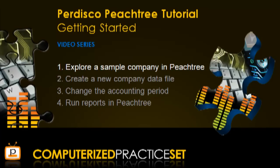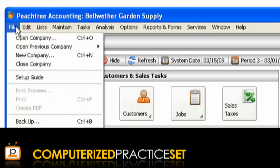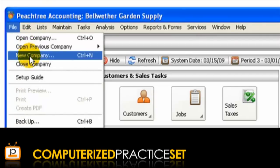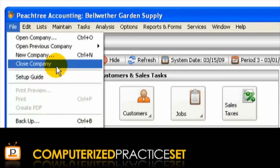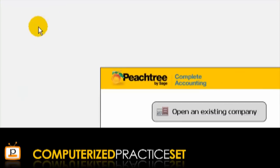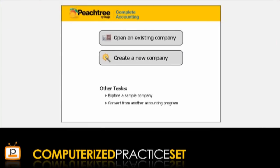Now that we've explored Peachtree a little, we can move on to the next step: creating a new company data file. From the File menu, you can select the New Company option. Alternately, you can close down the current data file by selecting File, Close Company. This brings up a window where we can open the Create a new company wizard by selecting that icon from the options provided.